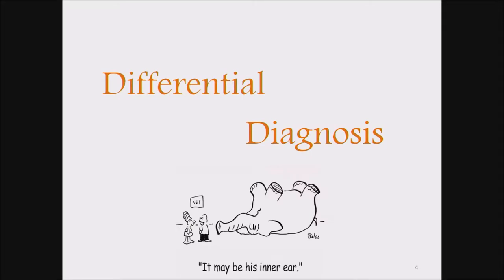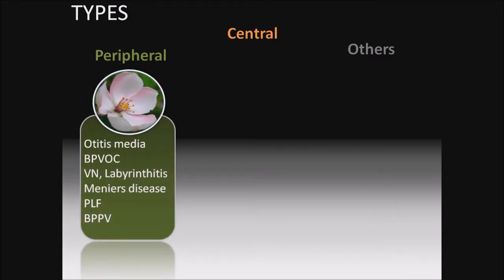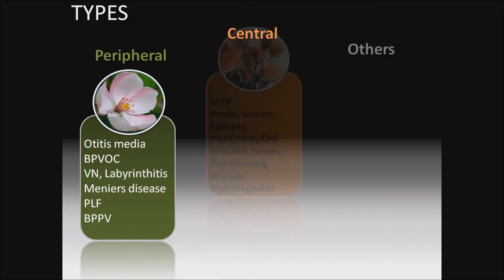Differential diagnosis — three types: peripheral, central, and others. Peripheral types most commonly seen: otitis media, BPVOC (benign paroxysmal vertigo of childhood), vestibular neuronitis, labyrinthitis, Meniere's disease, perilymph fistula, and BPPV.